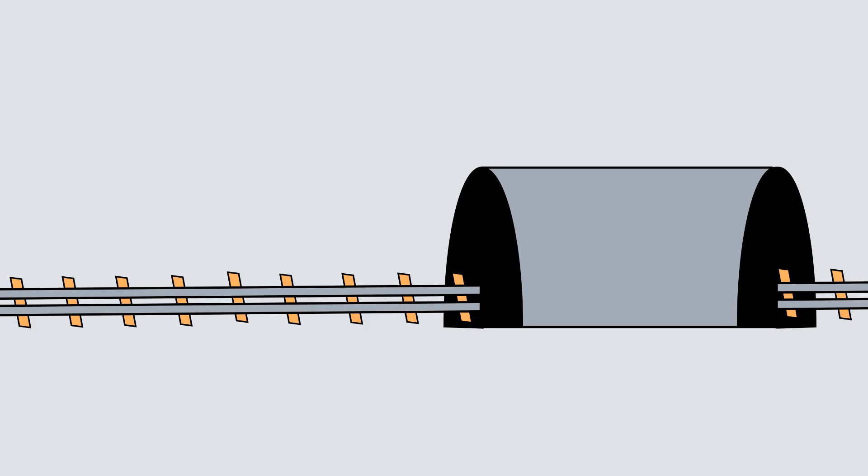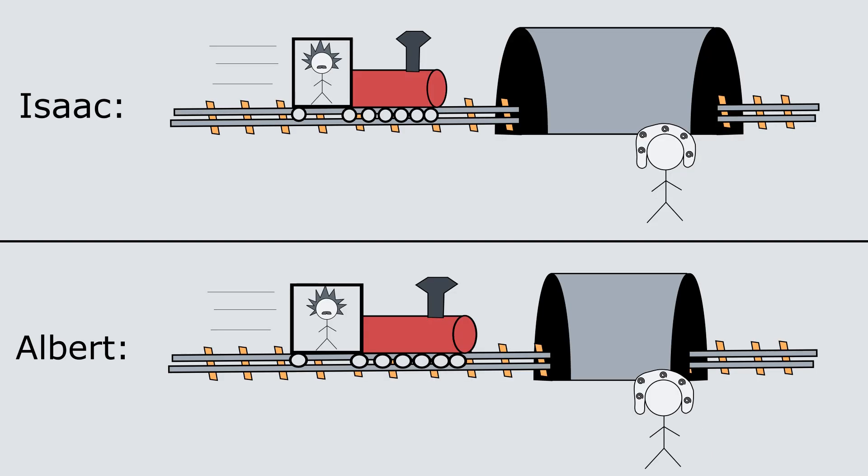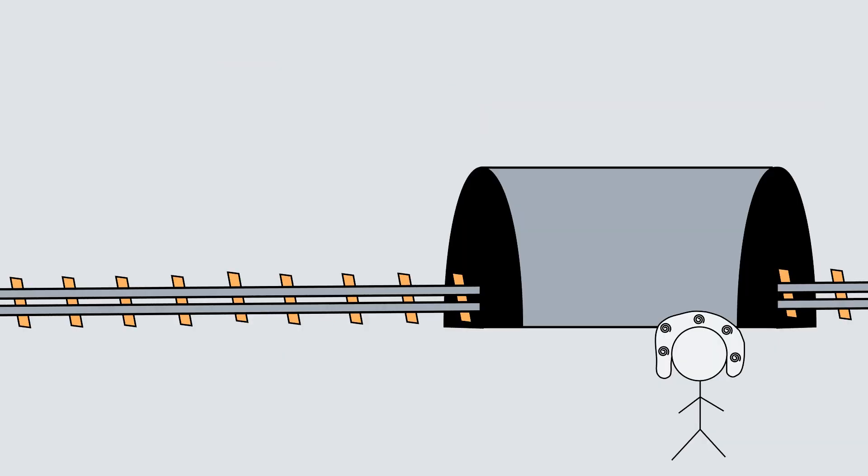The first paradox that I want to talk about arises from length contraction. Say that Isaac is standing by some train tracks that go through a tunnel and Albert is on a very fast train which goes through this tunnel. We know from length contraction that if Isaac and Albert measure both the length of the train and the length of the tunnel, they'll get different answers. Specifically, Isaac will measure the train to be shorter and the tunnel to be longer than Albert does. This isn't really a problem though, since we know that the two reference frames are related by a Lorentz transformation and therefore the underlying laws of physics aren't changing. But here's where the paradox comes in.